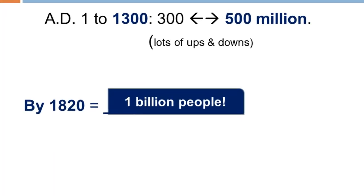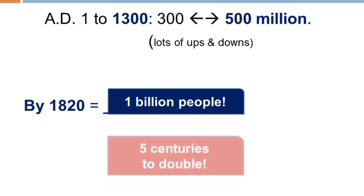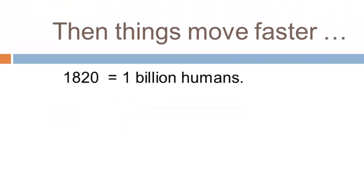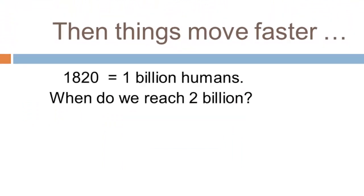By 1820 the world's population had reached one billion. This is despite tremendous losses to epidemics from the Old World in the Americas and the plague hitting Europe and much of Asia. Despite those losses there was a doubling in the world's population — and we can estimate that doubling took roughly five centuries.